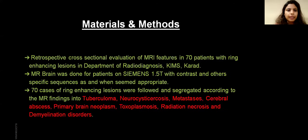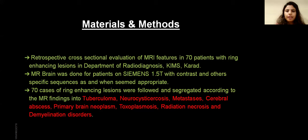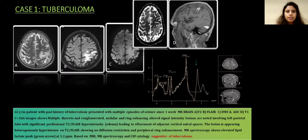The materials and methods of my study: retrospective cross-sectional evaluation of MRI features in 70 patients with ring-enhancing lesions in the Department of Radio Diagnosis, KIM Skarad. MR brain was done on Siemens 1.5 Tesla with contrast and other specific sequences as appropriate. 70 cases were segregated according to MR findings into tuberculoma, neurocysticercosis, metastasis, cerebral abscess, primary brain neoplasm, toxoplasmosis, radiation necrosis, and demyelination disorders.